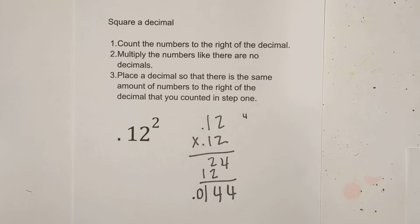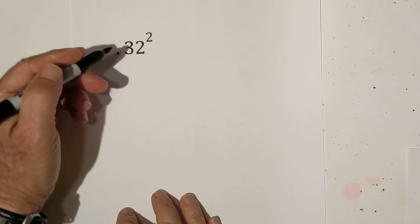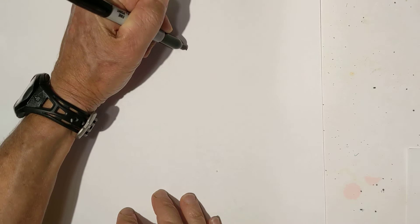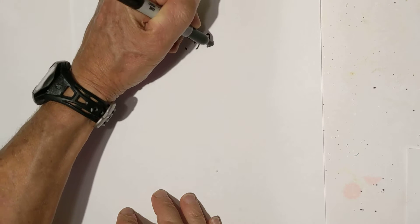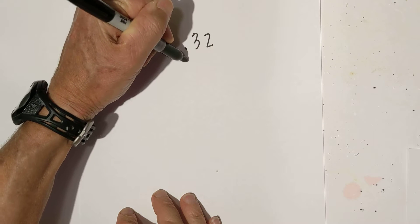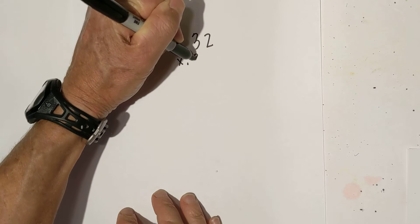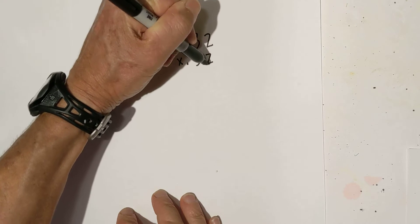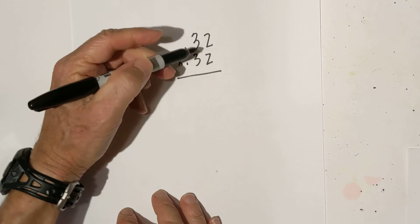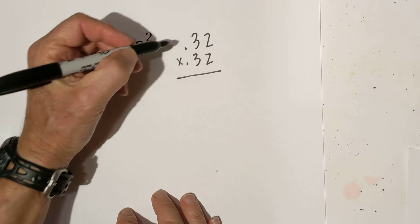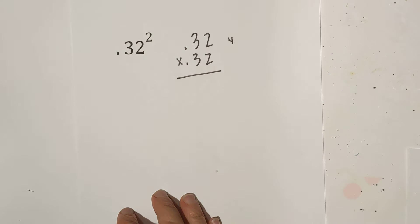Let's work another one. Now we have thirty-two hundredths, so we have thirty-two hundredths times thirty-two hundredths. We have one, two, three, four to the right. I'll write a little four to remember.